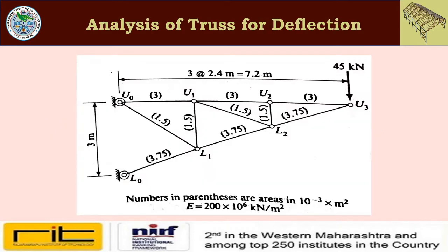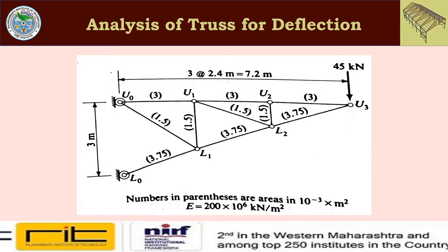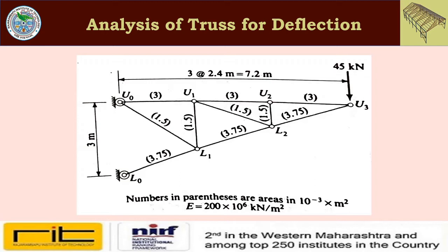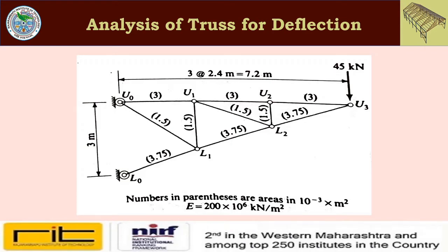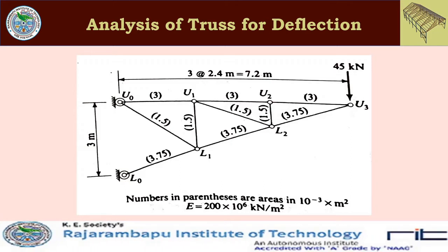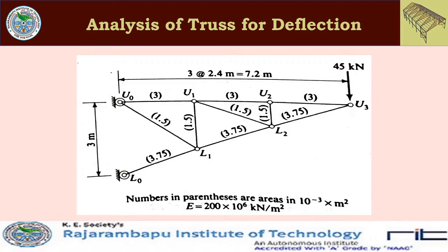Today's problem involves a cantilever truss with three panels. The top chord runs from U0 to U3, with panel lengths of 2.4 meters each. At a height of 3 meters, there is an inclined bottom chord member starting from L0 and meeting at U3. Both supports U0 and L0 are hinged.